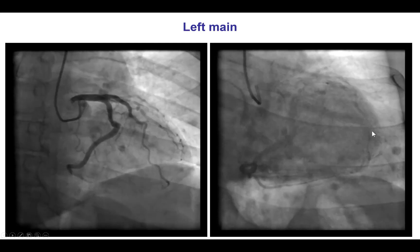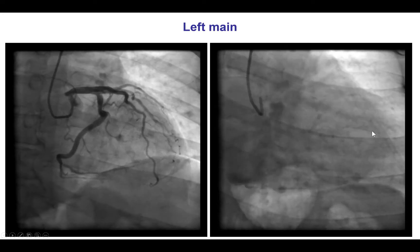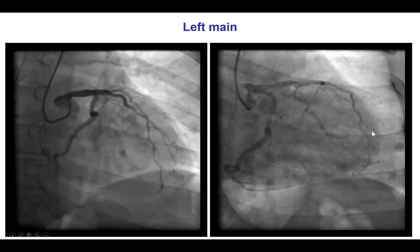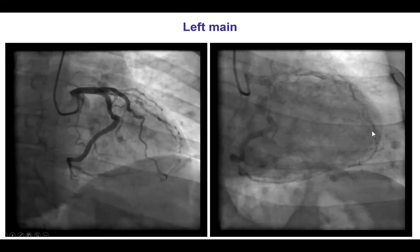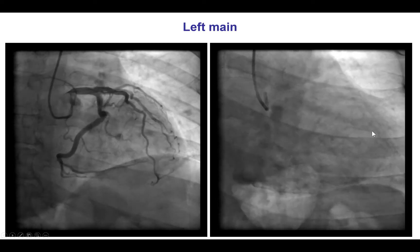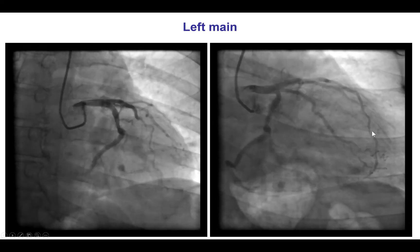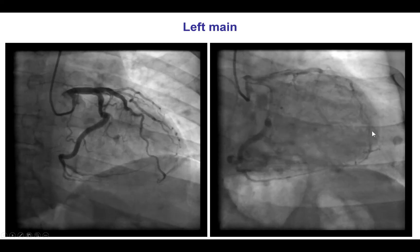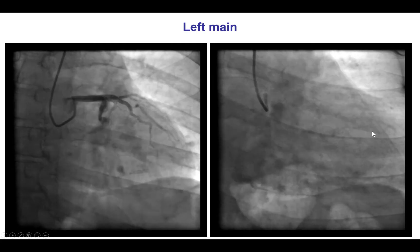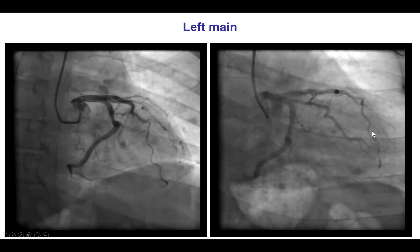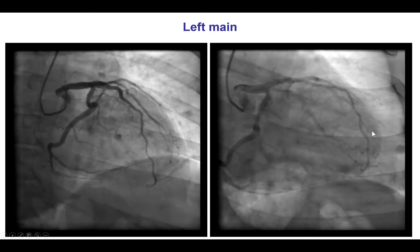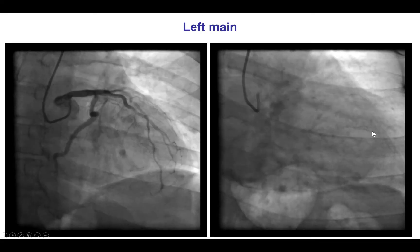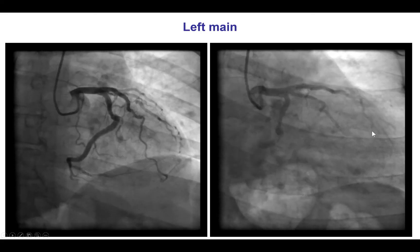However, we do believe that it is best to image first the left coronary artery, because if there is significant left main disease or disease in the LAD and the circumflex, this would be important information to tailor treatment and know how to manage the patient if there is hemodynamic collapse or other complications during attempts to recanalize the right coronary artery.